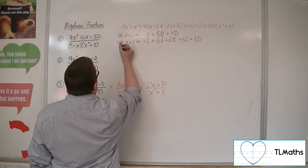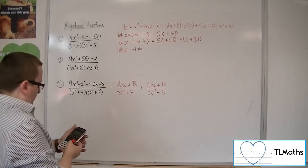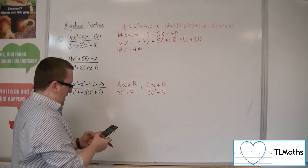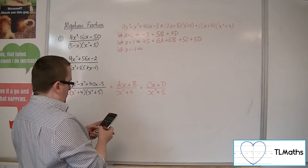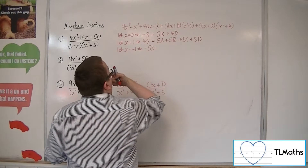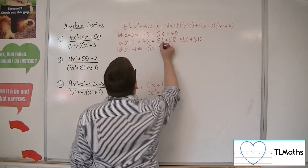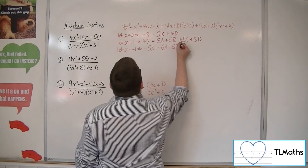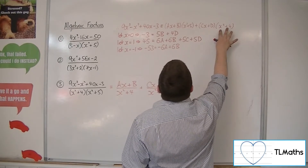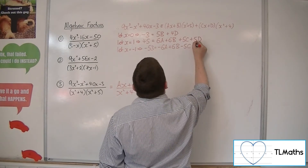Letting x equal minus 1: 9 times (minus 1) cubed minus (minus 1) squared plus 40 times (minus 1) minus 3 gives minus 53. On the right, x squared plus 5 is still 6, giving minus 6a plus 6b. And (minus 1) squared plus 4 is 5, giving 5 times (minus c plus d), so minus 5c plus 5d. That's equation 3.